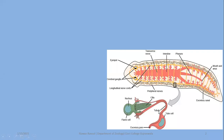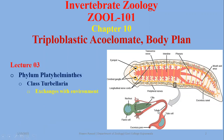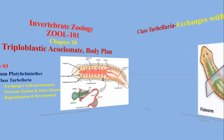Bismillahirrahmanirrahim. Today we are going to discuss the second portion of class Turbellaria. We have discussed other features of class Turbellaria in the first video. In this lecture number 2, we will discuss exchanges with environment, such as gaseous exchange and waste exchange in the reference of turbellarians, then the nervous system and sense organs, and lastly reproduction and development.